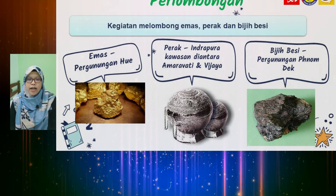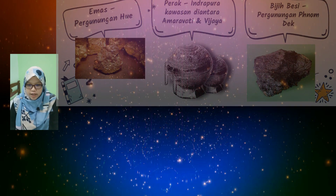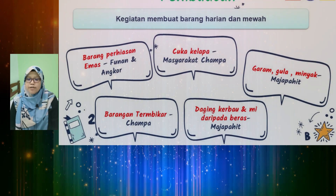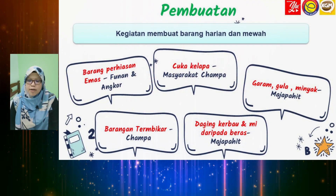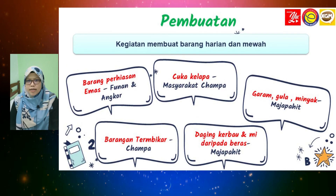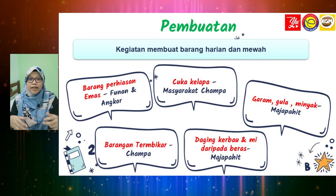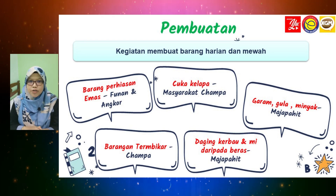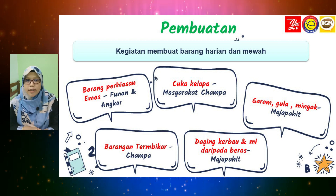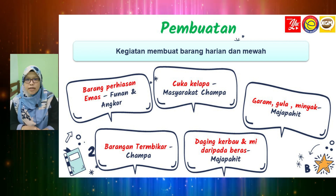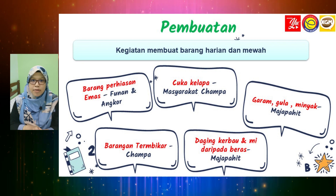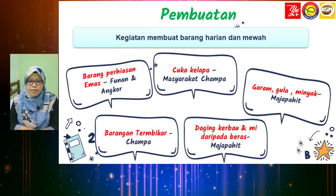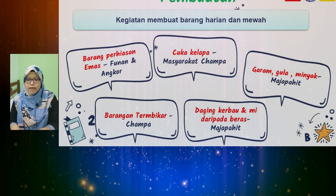Manakala aktiviti pembuatan — maksudnya kegiatan membuat barang harian dan juga barang mewah. Ada lima: yang pertama, barang perhiasan emas (masyarakat Funan dan Angkor membuat rantai dan gelang); yang kedua, cuka kelapa oleh masyarakat Campa; yang ketiga, garam, gula dan minyak oleh masyarakat Majapahit; yang keempat, barangan tembikar oleh masyarakat Campa; dan yang kelima, daging kerbau dan pembuatan mi daripada beras oleh masyarakat Majapahit.